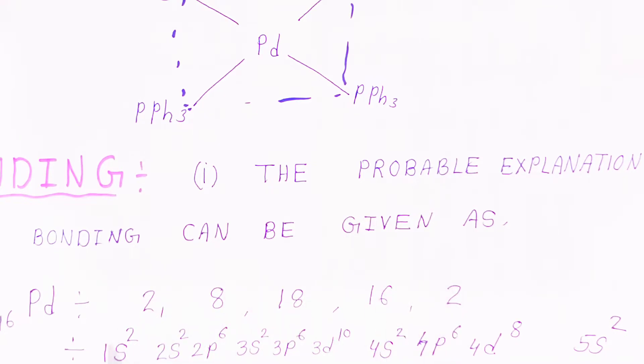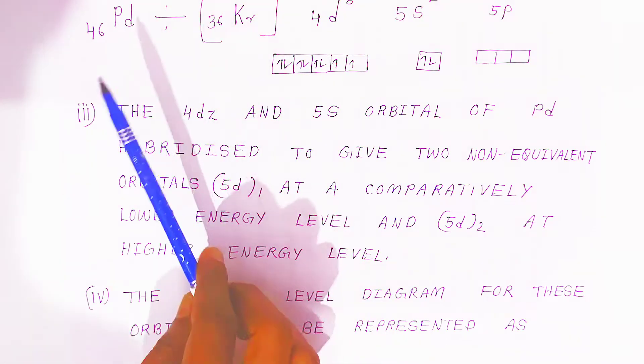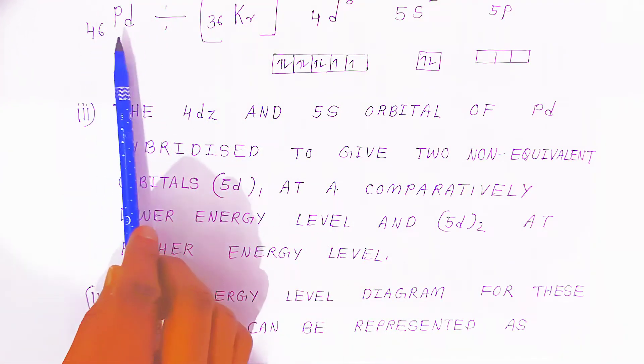The electronic configuration will be 1s² 2s² 2p⁶ 3s² 3p⁶ 3d¹⁰. Now in the fourth orbit: 4s² 4p⁶ 4d⁸ and 5s². Now we are going to write palladium in ground state electronic configuration.